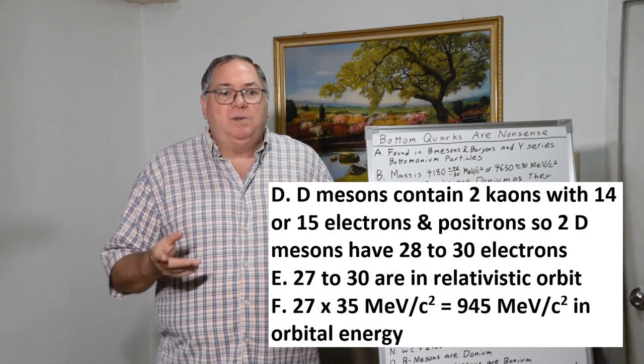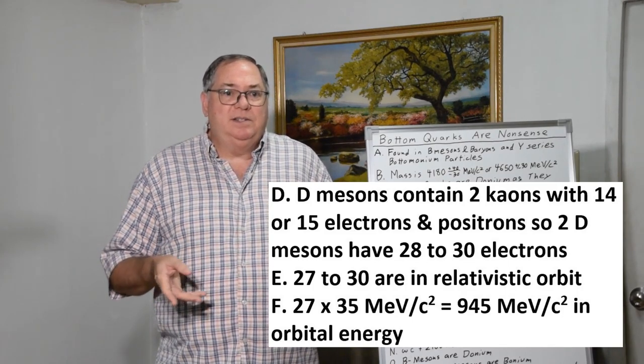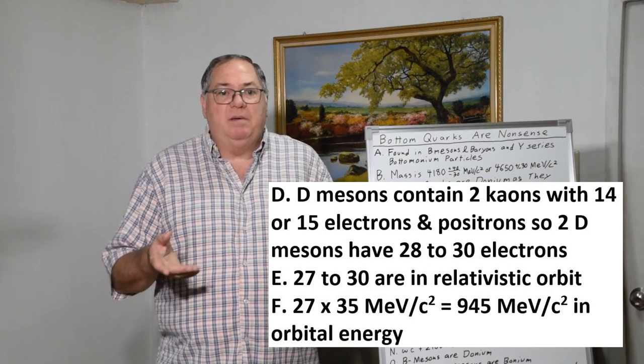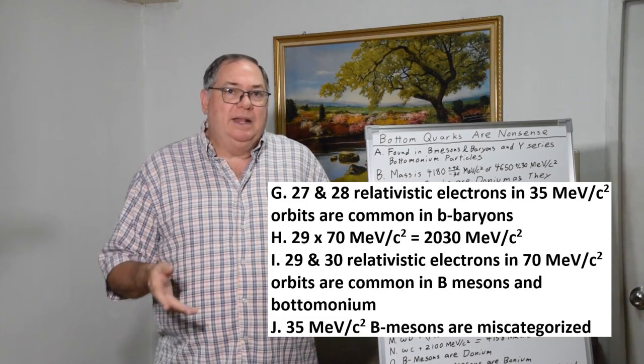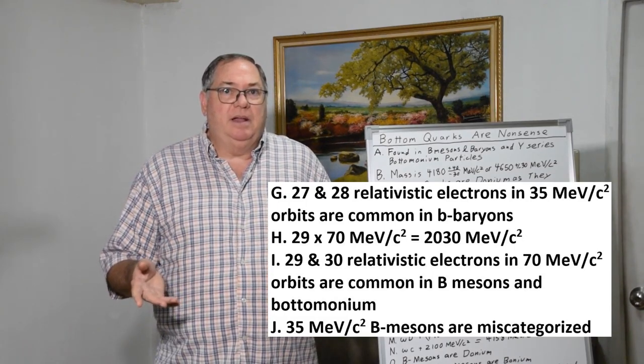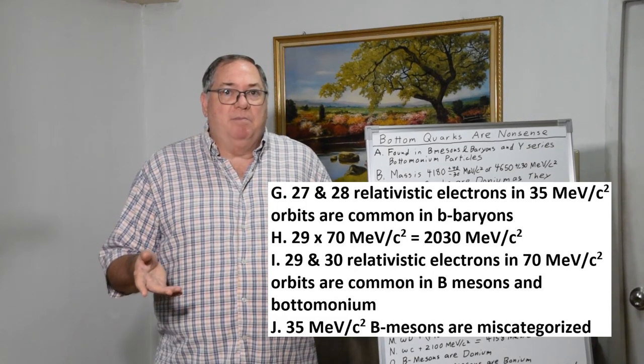You end up with 27 times 35 is 945 MeV/c² on the low energy range of a donium orbit. These orbits are typically found in the bottom baryons.